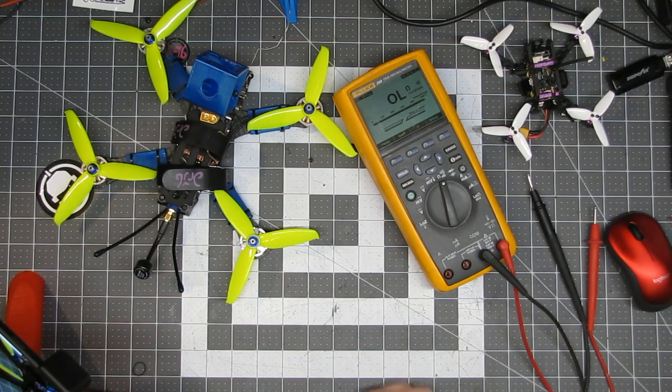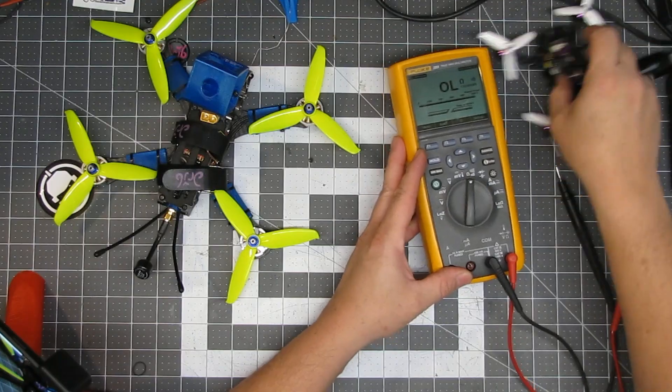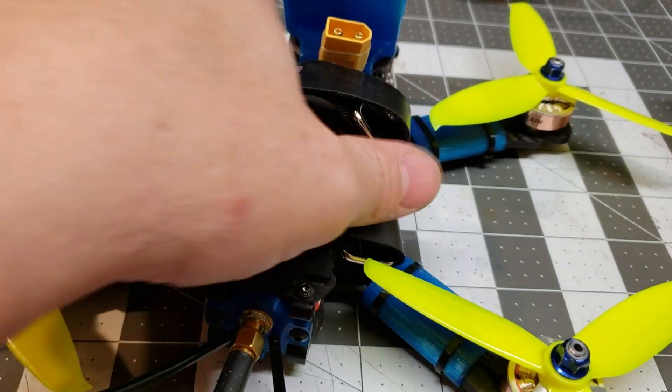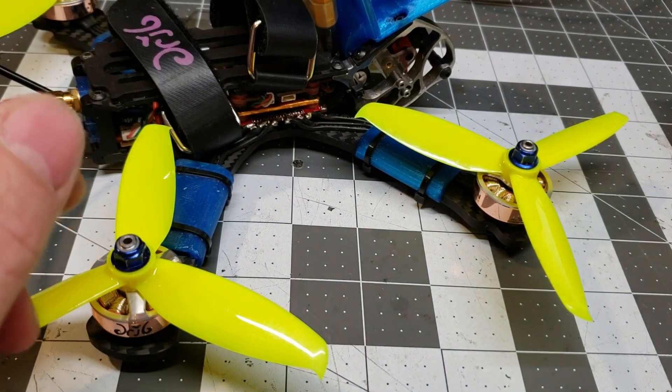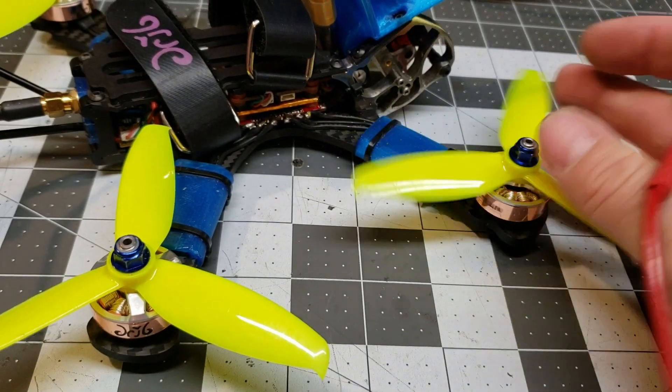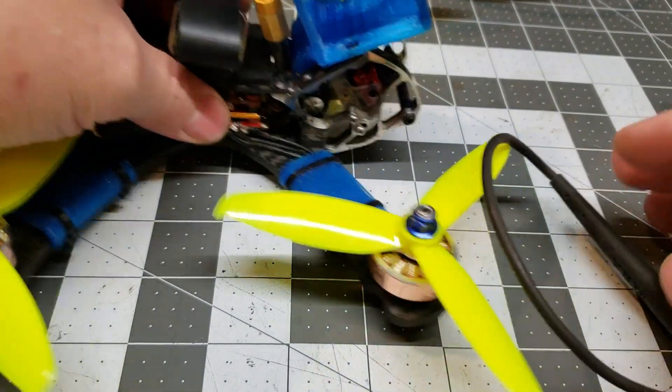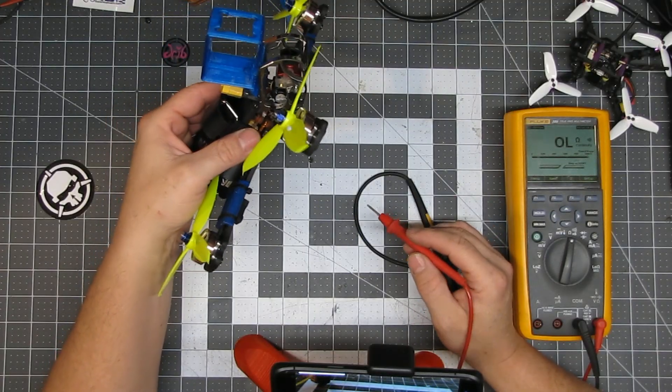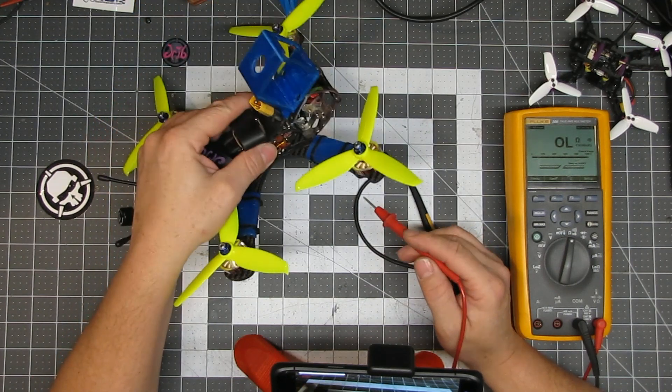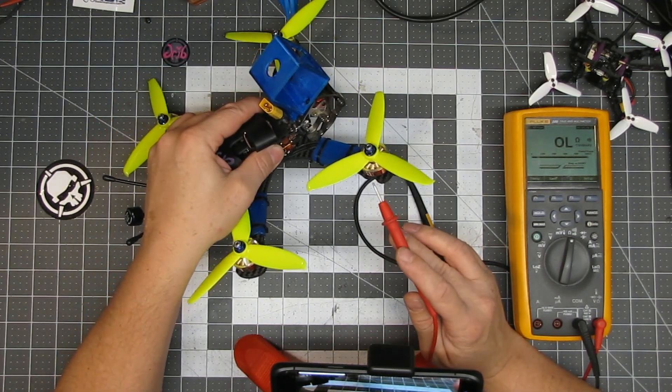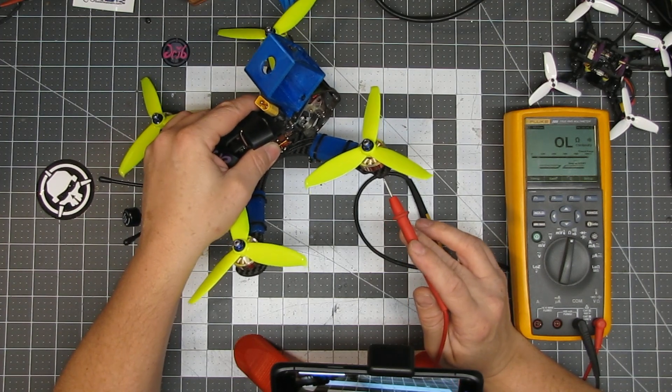And what we're gonna do with this is we're gonna take your quad and you're gonna start checking for shorts. Sounds crazy right? Well what happens sometimes if you build your quad or maybe even have a bad motor, you'll have a short between your motor and the carbon frame.